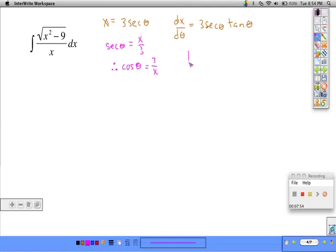It's going to be helpful for us to think about a triangle with this: adjacent side of 3, hypotenuse of x, opposite side being the square root of x squared minus 9. You'll see why this is useful in a minute. So now I'm going to come back here and make some substitutions: integral of the square root of 9 secant squared theta minus 9 over 3 secant theta, and from up here, dx is equal to 3 secant theta tangent theta d theta.